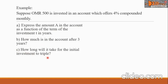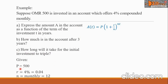Starting with letter A, let us write the compound interest formula and collect the given data. P equals 500 Omani Rials, R equals 4%, written as the decimal 0.04 (calculated as 4 divided by 100), and N equals 12 since the interest is compounded monthly.